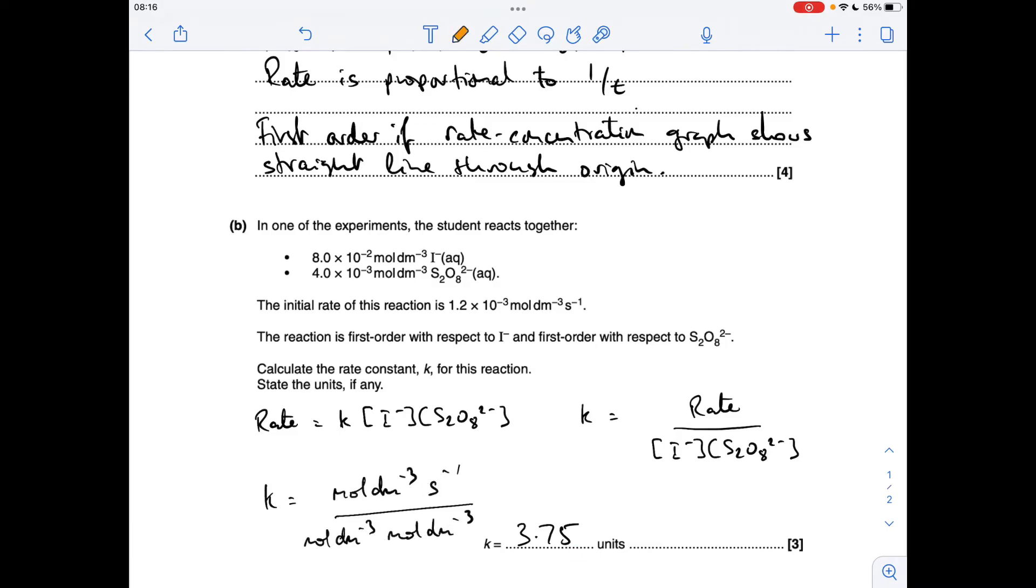Moving up to the units. All I've done is replaced the numbers with the units of everything. So units of rate on the top, and two lots of moles per decimeter cubed concentration units on the bottom. We can cancel out that moles per decimeter cubed with one of those. So all we need to do is take these up to the top and flip their signs, which gives us units of dm cubed, mol to the minus 1, s to the minus 1.